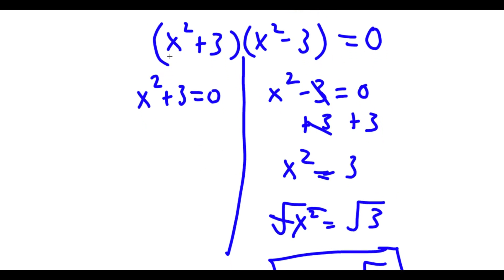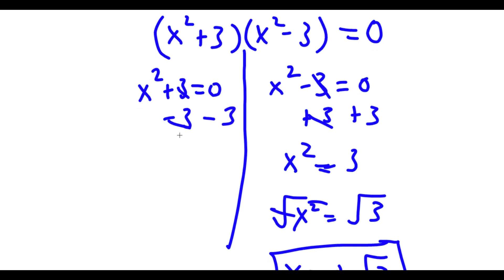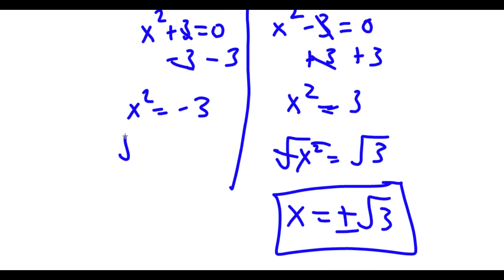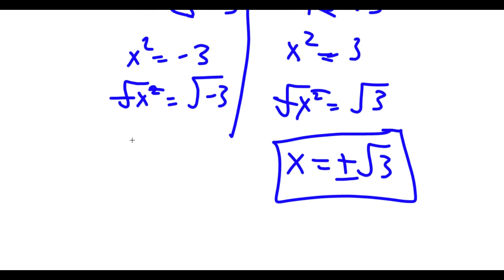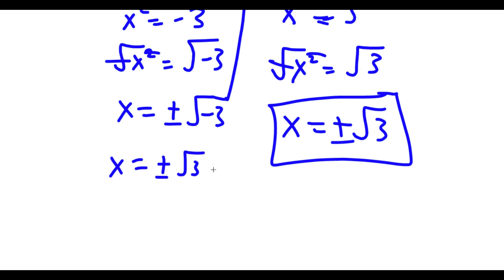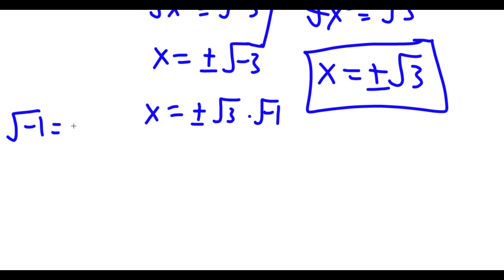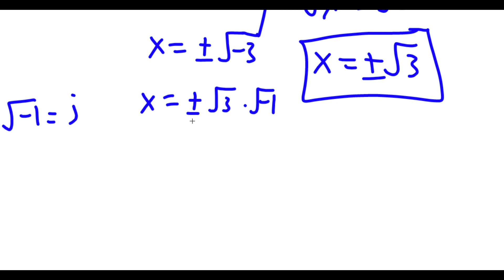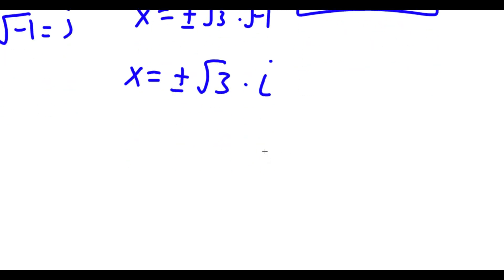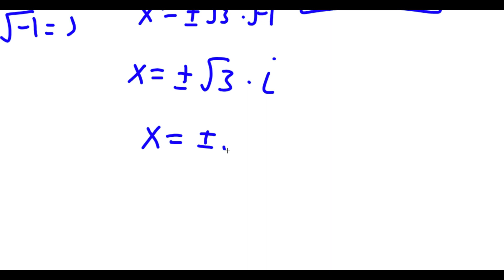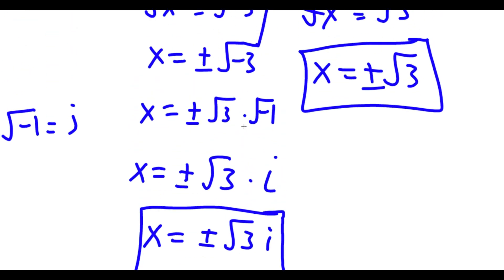Now I'm going to get two more solutions from x squared plus 3 equals 0. Subtracting 3 on both sides gives x squared equals negative 3. Taking the square root on both sides, I'm left with x equals plus or minus the square root of negative 3. The square root of negative 3 is the same as the square root of 3 times the square root of negative 1. And the square root of negative 1 is the imaginary number i. So x equals plus or minus the square root of 3 times i.